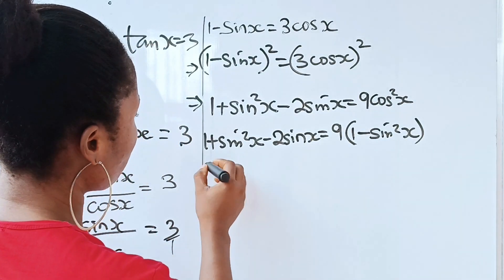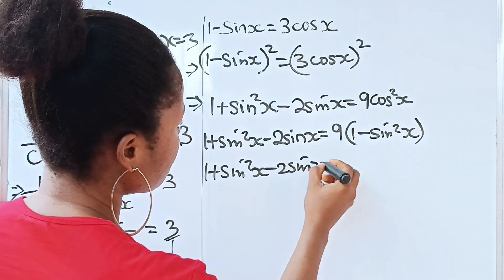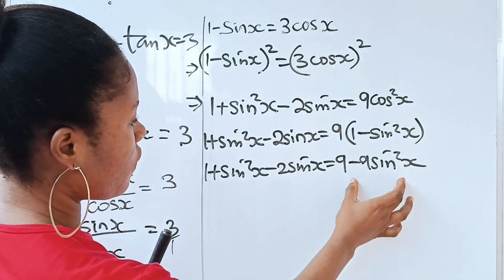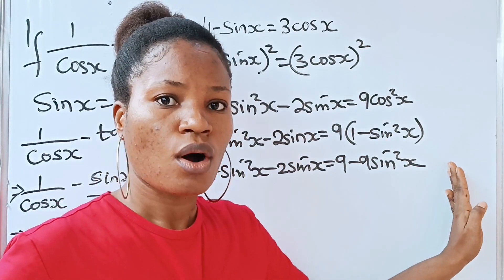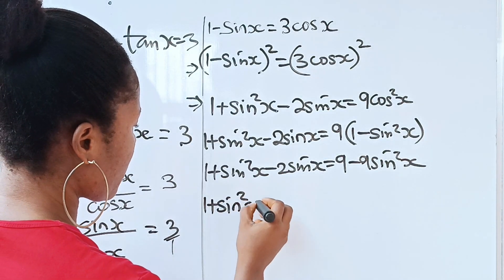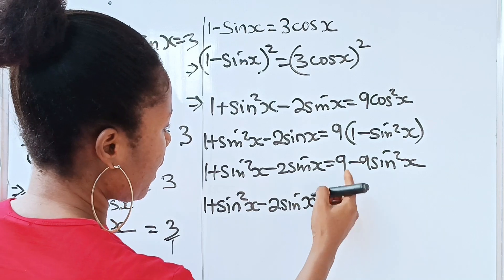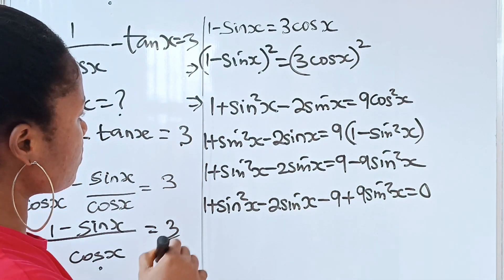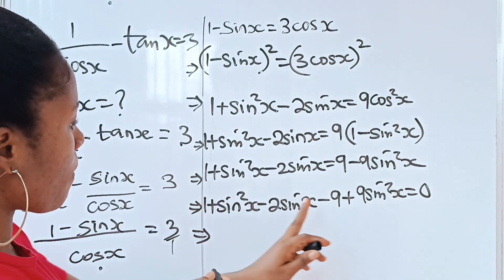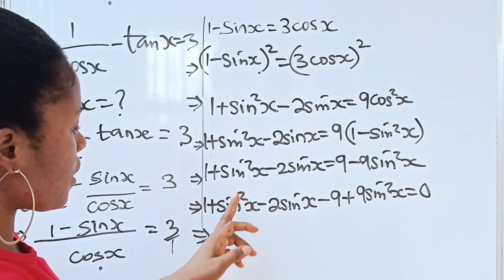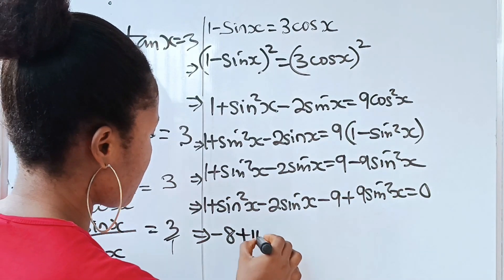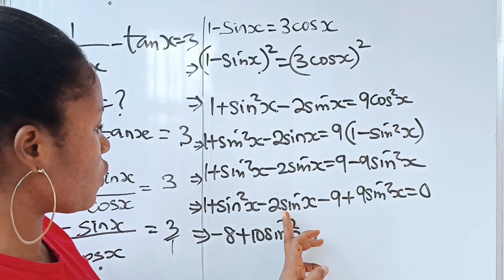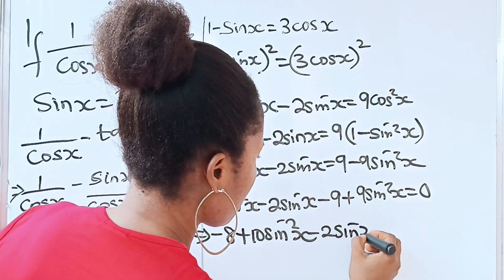We have 1 plus sine squared x minus 2 sine x is equal to 9 minus 9 sine squared x. Let's transfer everything to one side and equate to 0. So we have 1 plus sine squared x minus 2 sine x minus 9 plus 9 sine squared x is equal to 0. Collecting like terms: 1 minus 9 gives us minus 8; sine squared x plus 9 sine squared x gives us 10 sine squared x; and we have minus 2 sine x. So: 10 sine squared x minus 2 sine x minus 8 equals 0.